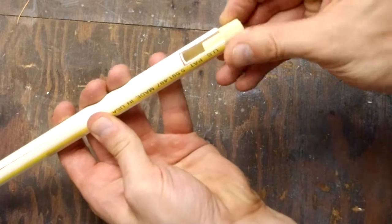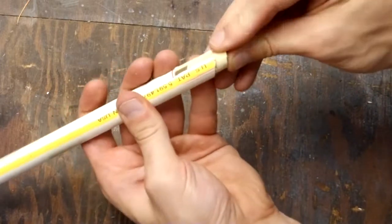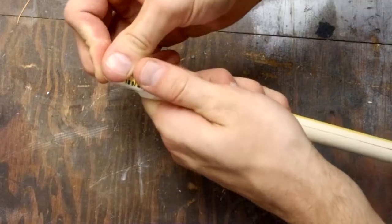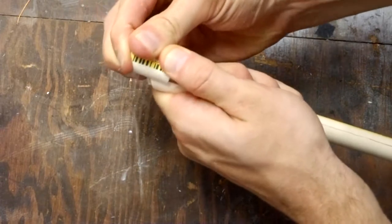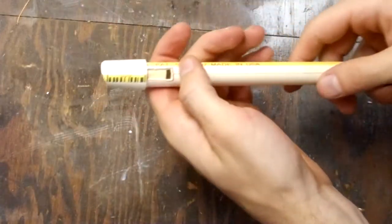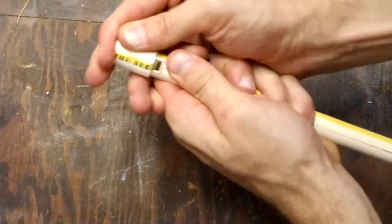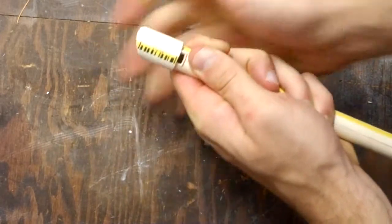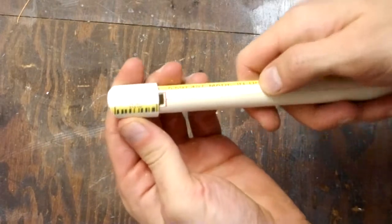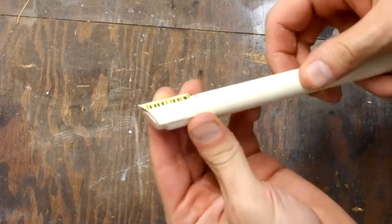Now place the wooden dowel into the end and match up the angled cuts. Then snap on the smaller mouthpiece. Slide it down so it lines up with the wooden dowel. You should have a small gap like that. Now your whistle should be able to play a single note.